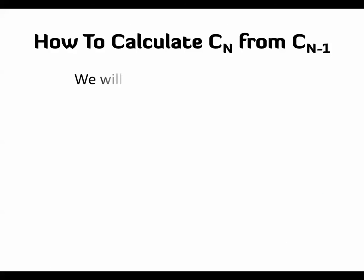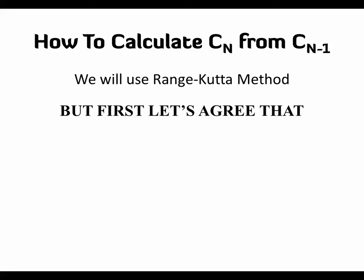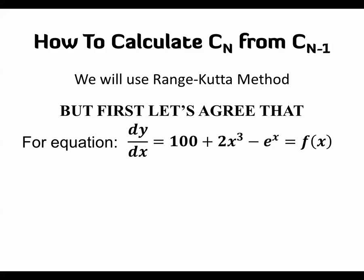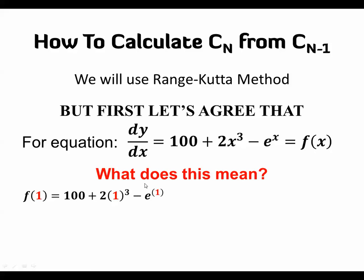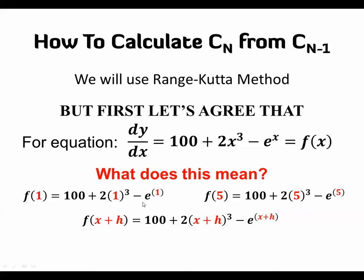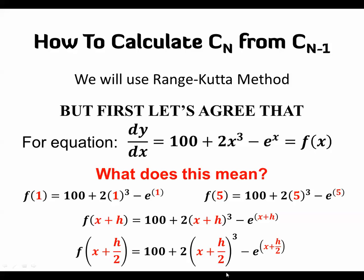For the Runge-Kutta method, we first agree that the differential equation is expressed as dy/dx equals f(x, y). To calculate y_{n+1} from y_n, we use: y_{n+1} = y_n + h times a weighted combination of k1, k2, k3, and k4. The value x_{n+1} = x_n + h. Each k value is computed by evaluating f at specific points: for instance, k1 uses x_n and y_n, while k2 uses x_n + h/2, and any x or y argument inside f changes correspondingly.